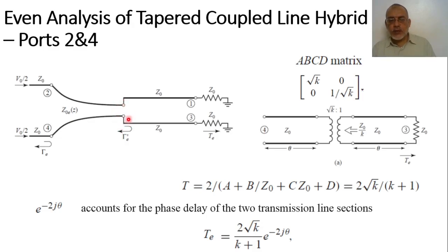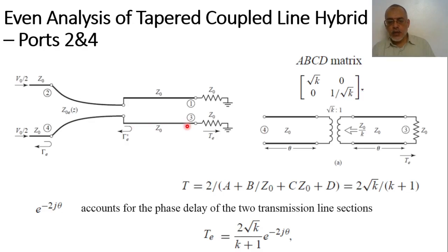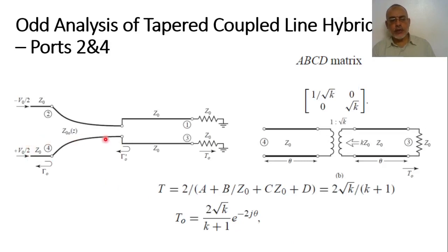This 2√K/(K+1) is the transmission coefficient at the junction going from the tapered line section of even characteristic impedance Z₀/K to the straight transmission line section of impedance Z₀. Multiplying by e^(−j2θ) for the round-trip phase shifts of both line sections, the even transmission coefficient is t_e = [2√K/(K+1)] · e^(−j2θ).